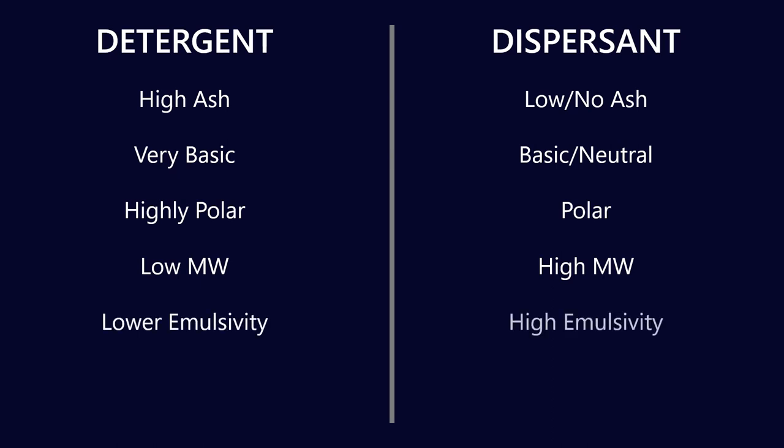On the detergent side we have lower emulsivity and on the dispersant side we have higher emulsivity and that's partly because of that very very long hydrocarbon tail which means that it bonds very strongly with the oil that is around it.